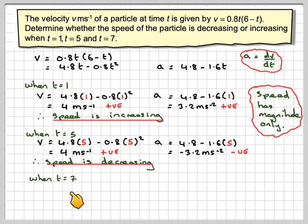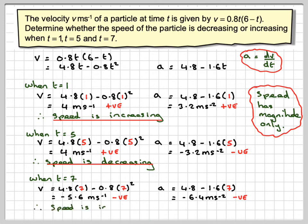So when t equals 7, we're going to have v equals 4.8 times 7 minus 0.8 times 7 squared, which gives minus 5.6 meters per second, which is negative, and 4.8 minus 1.6 times 7, which gives minus 6.4, which is negative. So here we have a negative negative, so therefore the speed is increasing.